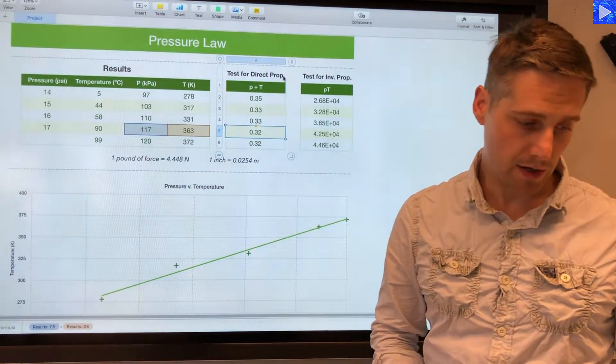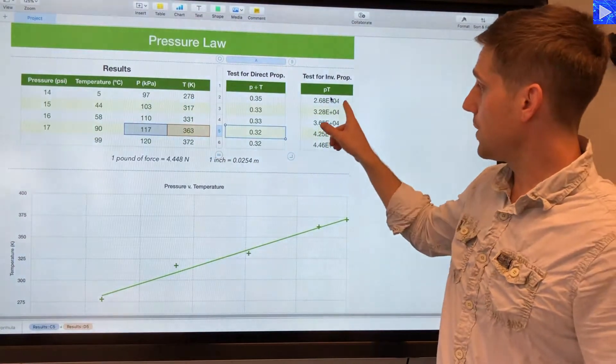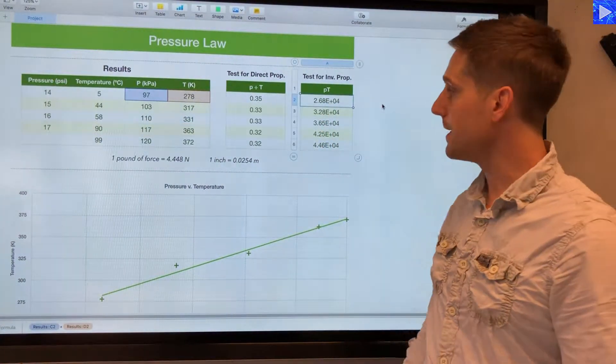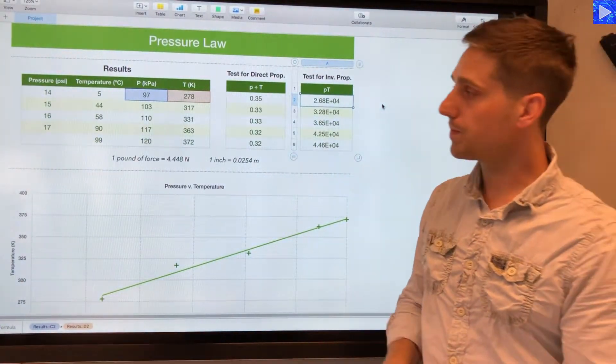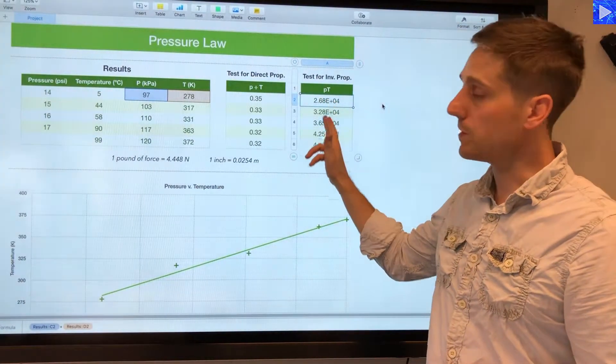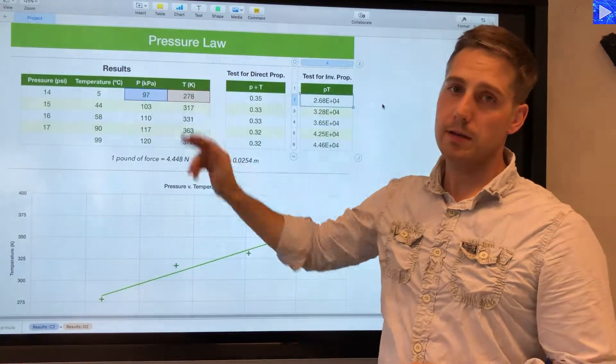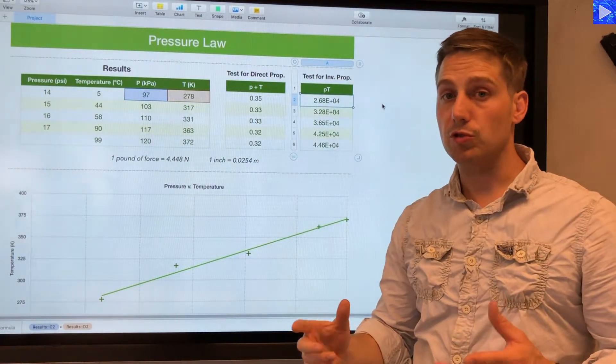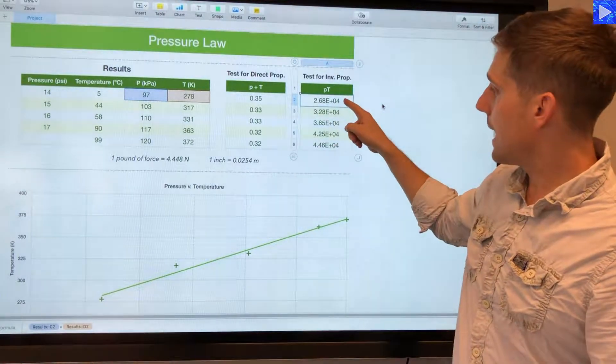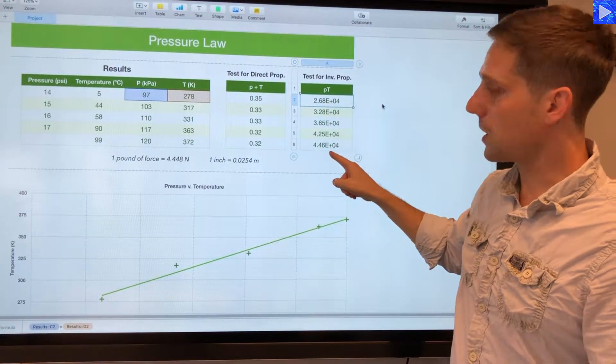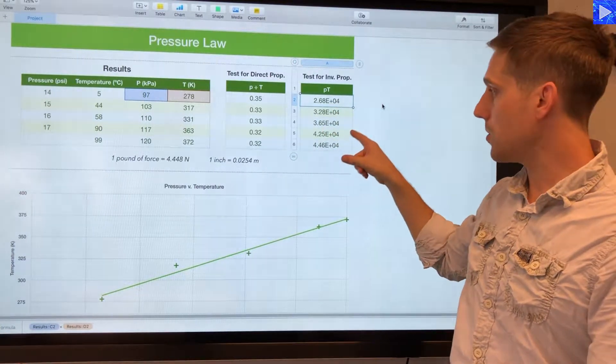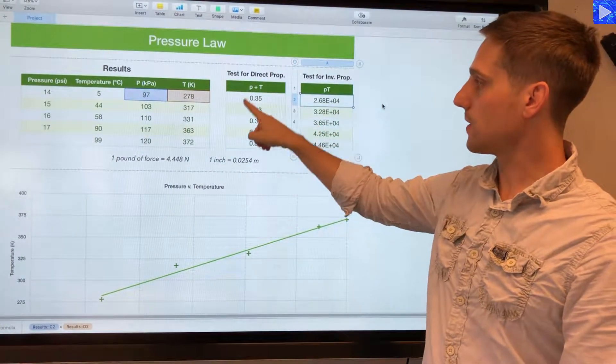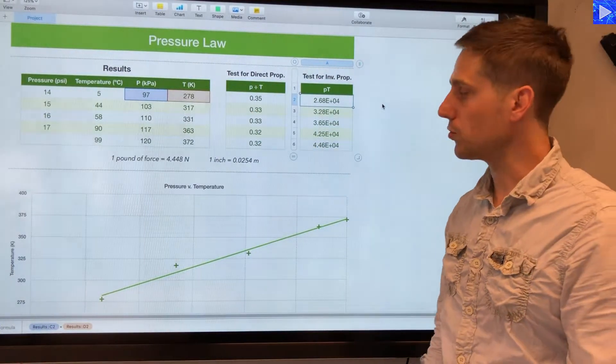You could kind of go that way. And we can definitely see though in the test for inverse proportionality that pressure and temperature are not inversely proportional. What this column is doing is multiplying the pressure and temperature. If two variables are inversely proportional, then their product will be constant, and we can clearly see that this is going up. So we know they are definitely not inversely proportional. That strengthens the case for accepting that they are directly proportional.